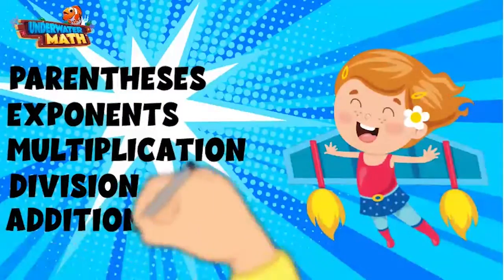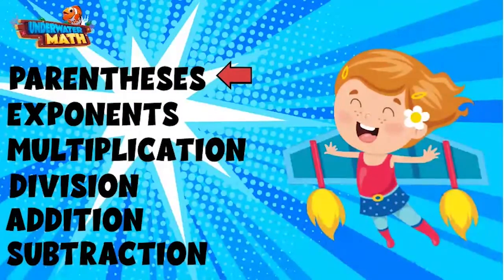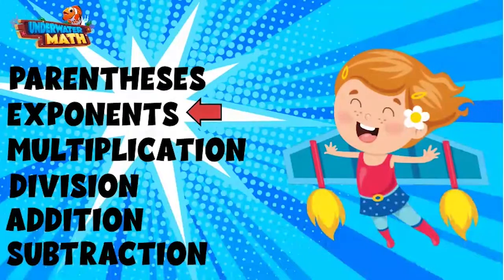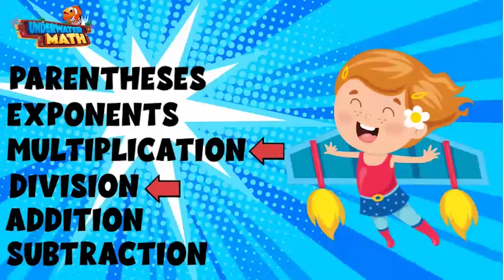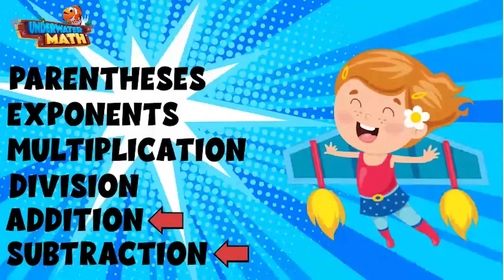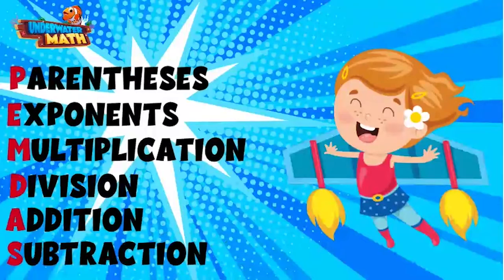First is parentheses. Next is exponents. Then we have multiplication and division, which happen at the same time from left to right. Finally, we have addition and subtraction, which also happen at the same time from left to right. We use a handy acronym to help us remember this order called PEMDAS, by taking the first letter of each word in the order of operations.